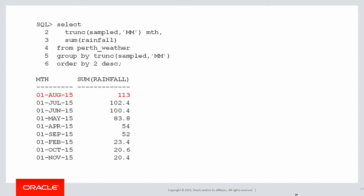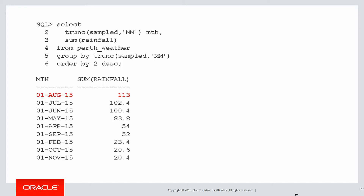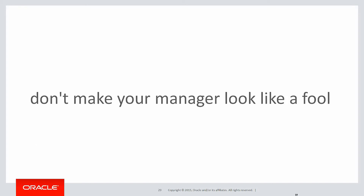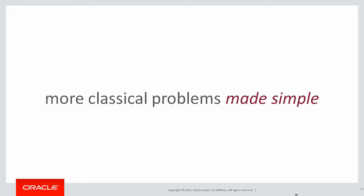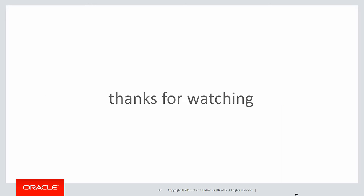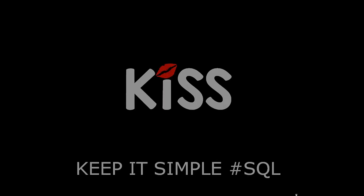Now when we rerun the manager's report, we can actually see that it was actually August that had the highest rainfall, and he can go up to his higher management with confidence that the data is now correct. Piece of career advice: don't make your manager look like a fool — analytics has come to the rescue. You can run these yourself by clicking on the script below. In the next session we'll look at more classical problems made simple with analytics. Thanks very much for watching, and keep it simple with SQL!